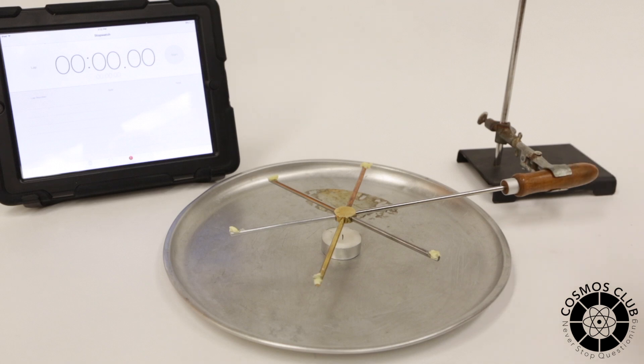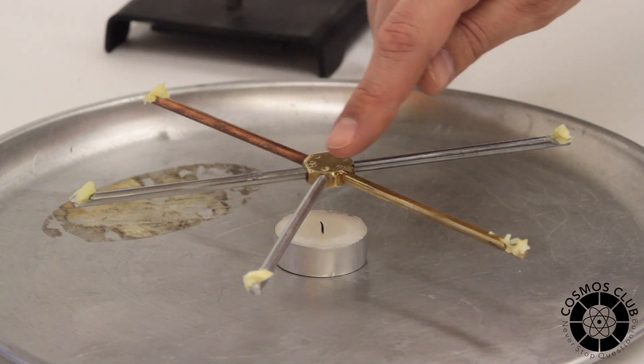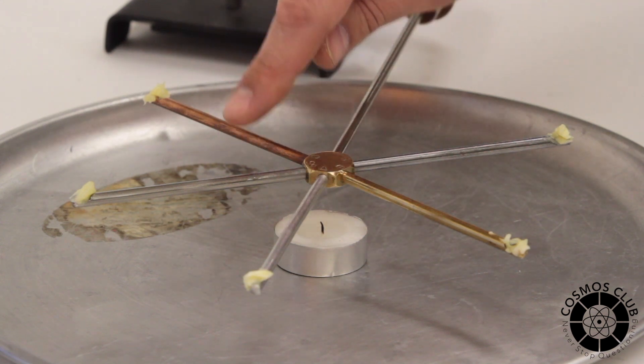We have four different types of metal, sorry, five different types of metal. We have silver, brass, aluminum, stainless steel, and copper.